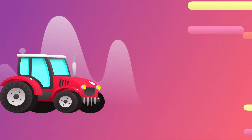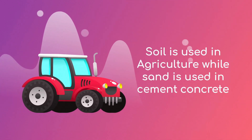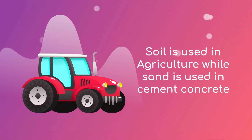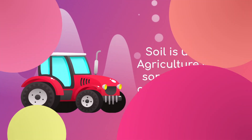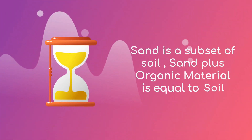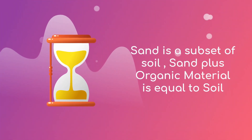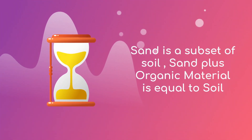Soil is used in agriculture, while sand is used in cement concrete. Sand is a subset of soil — sand plus organic material is equal to soil.